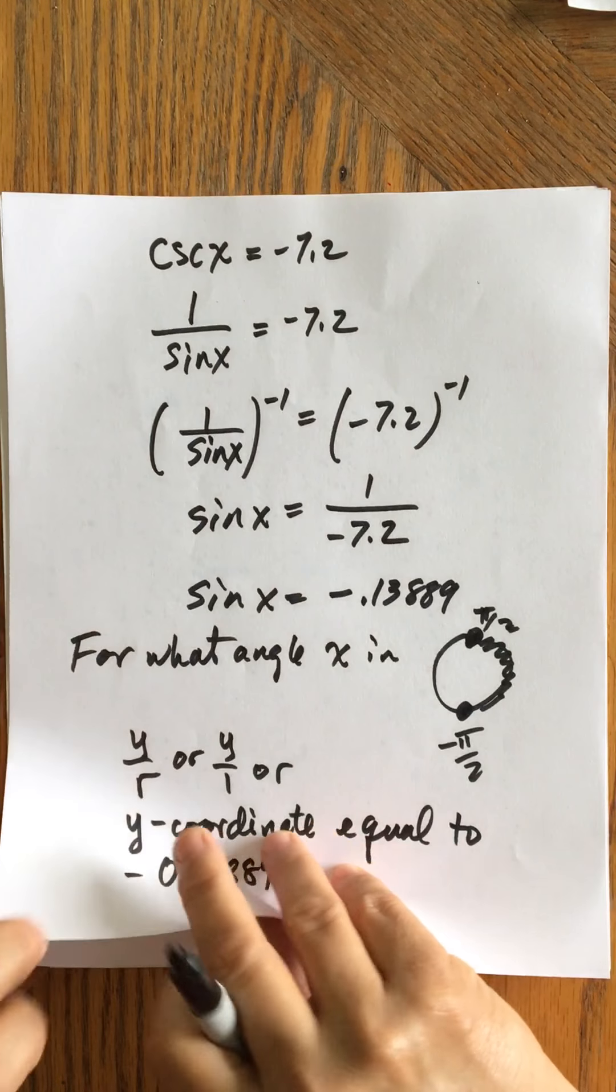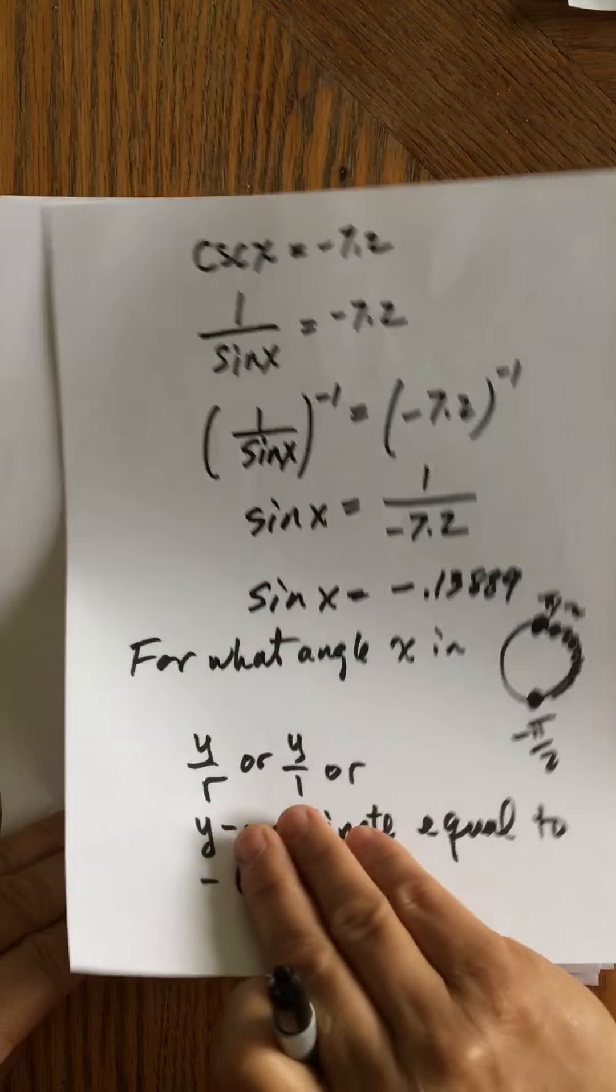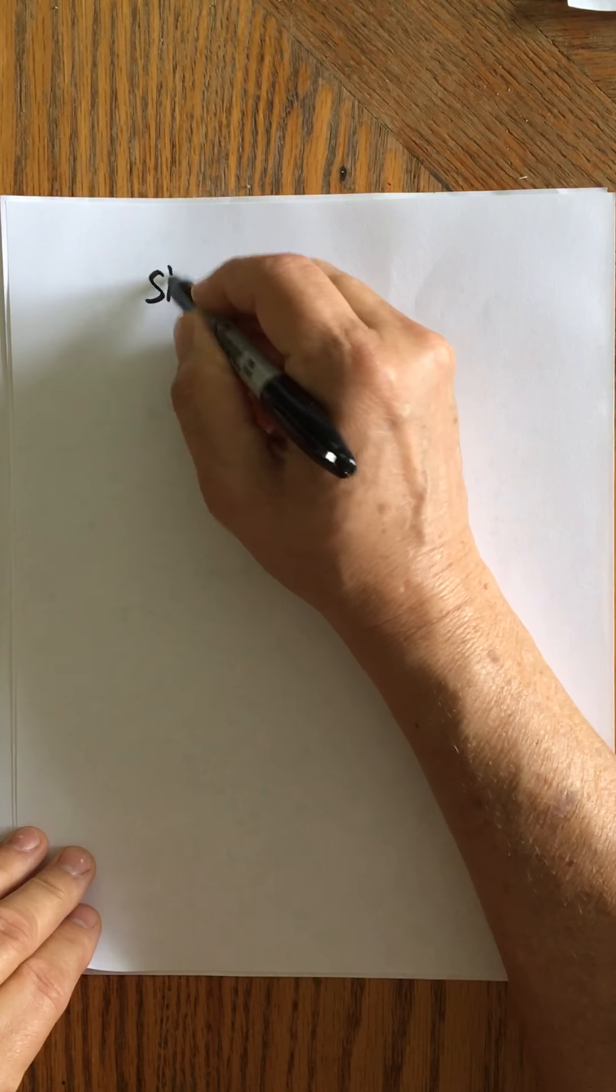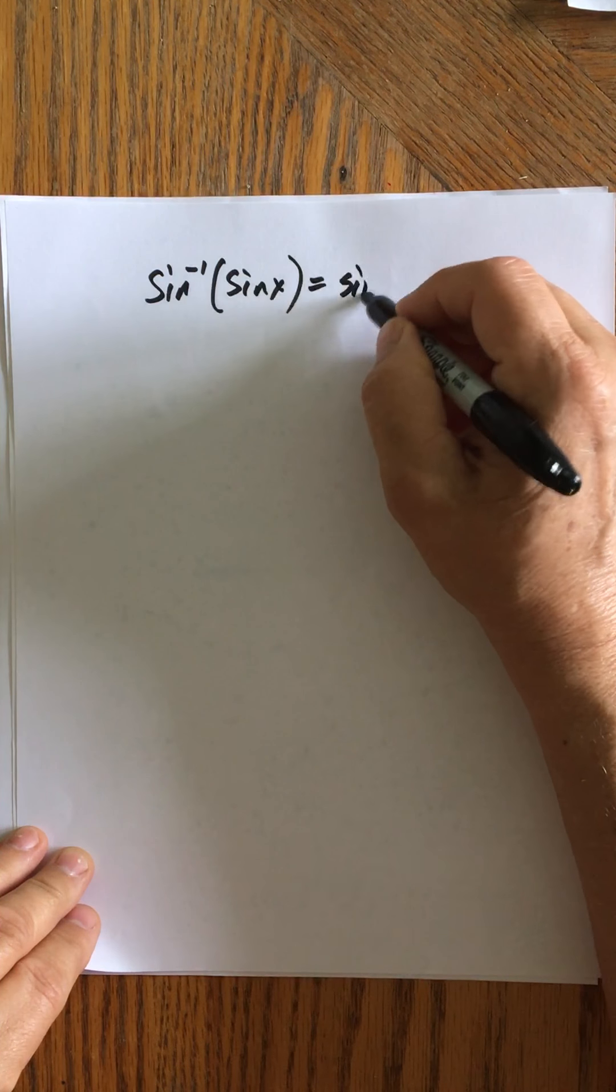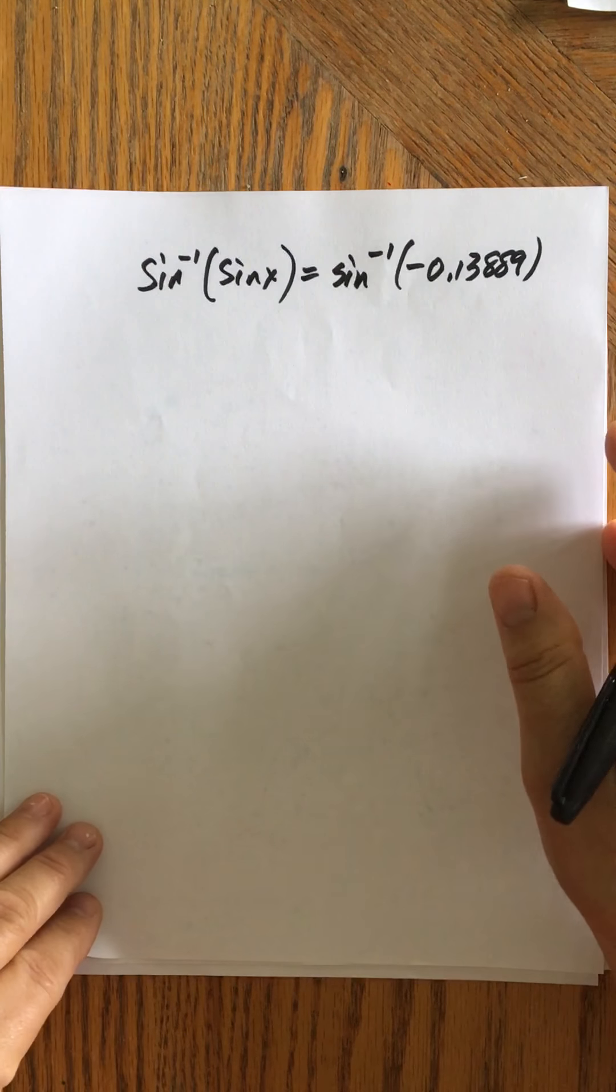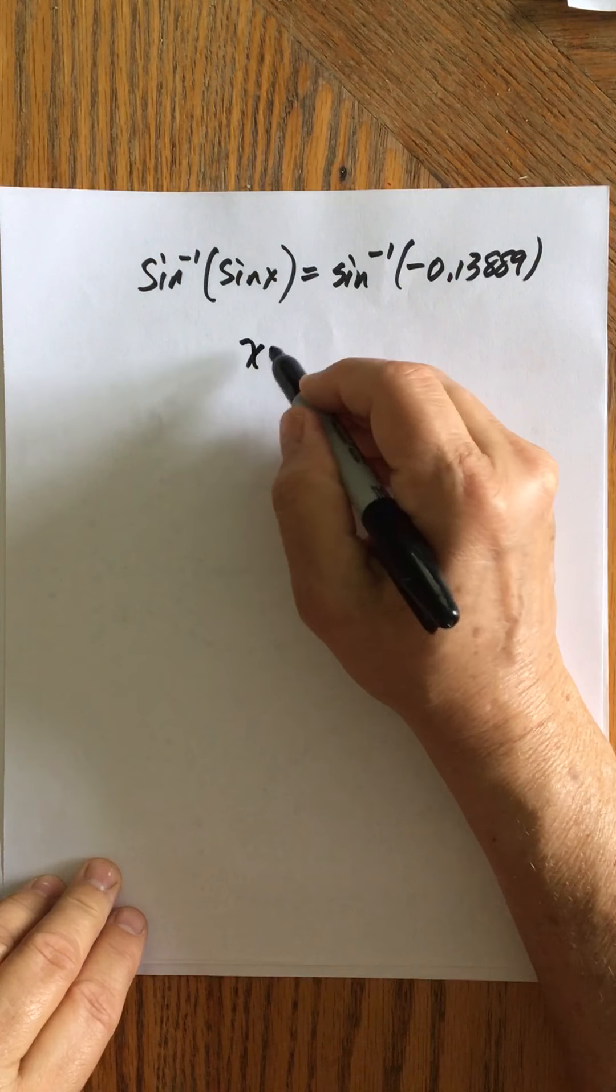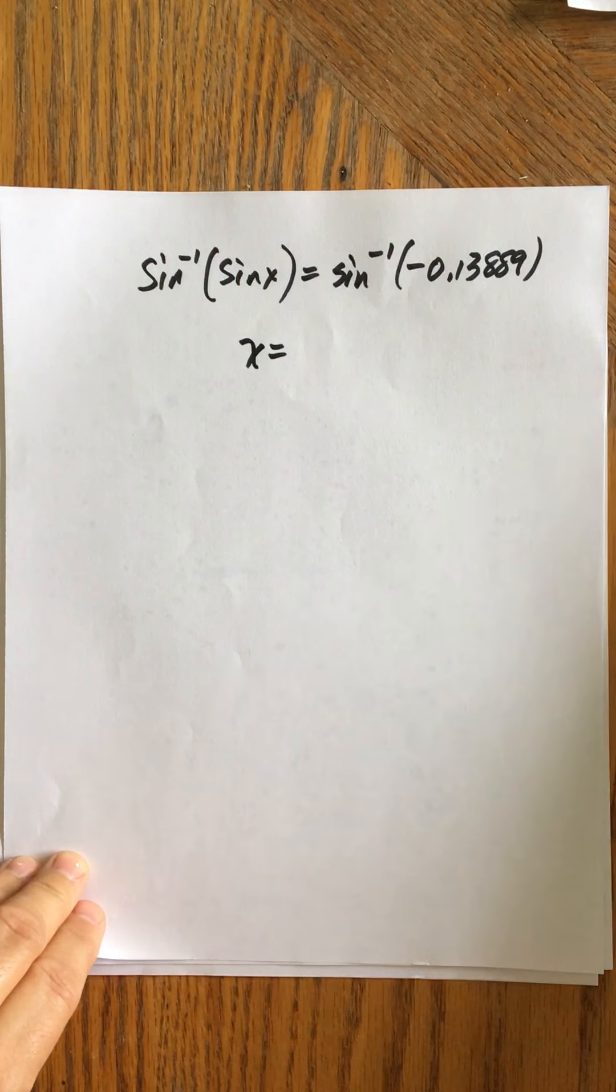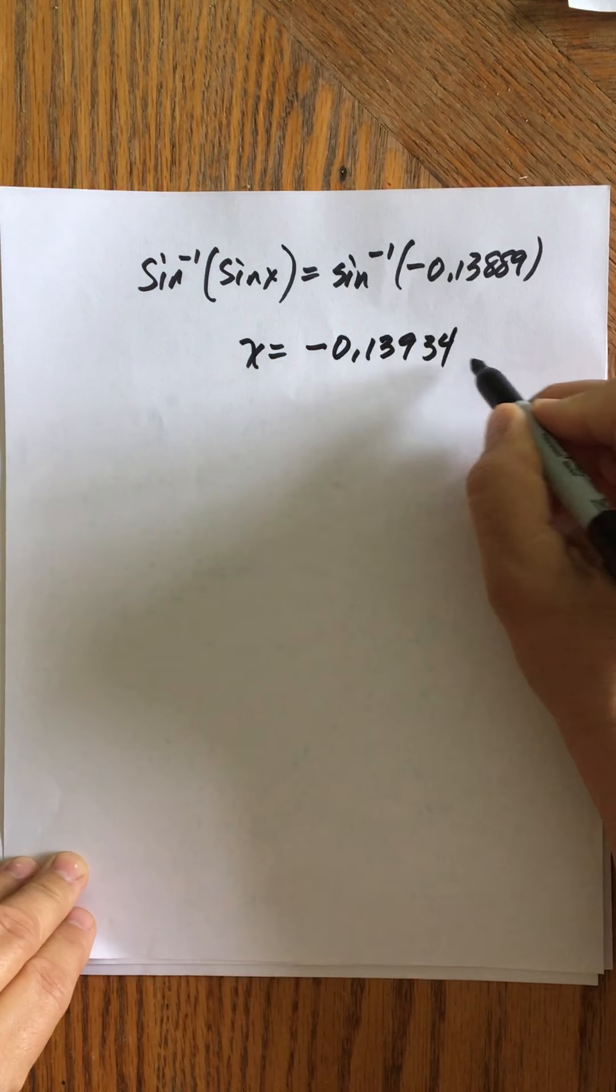So how I do that in the calculator is, I sure go through a lot of paper here. So what I do is, I take the inverse sine of both sides, and that will, my calculator will find that angle for me. Now, you know, most people, I mean, I write this for you. Most people would actually skip this and just go right to x equals the inverse sine of negative 0.1389. And then the calculator will give that answer as negative 0.13934, understood radians, right?